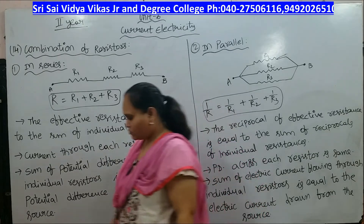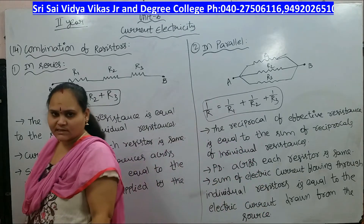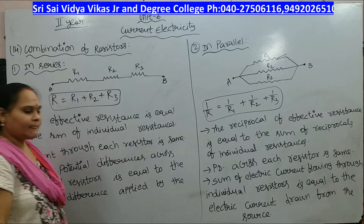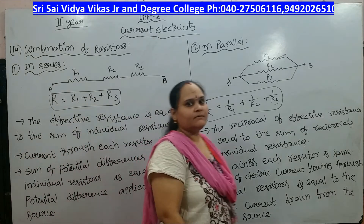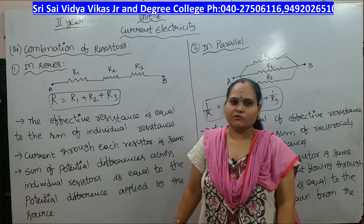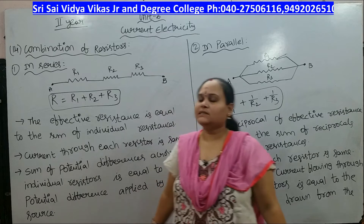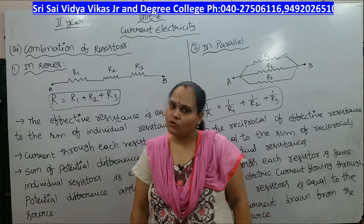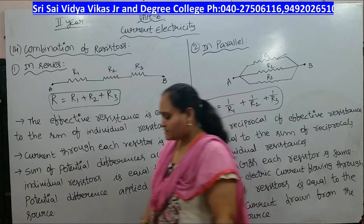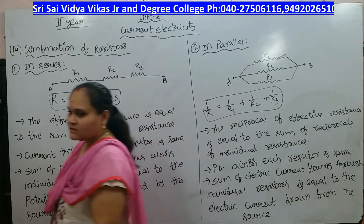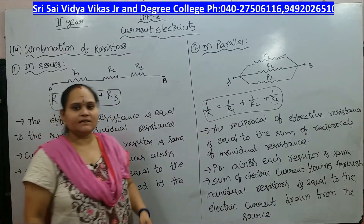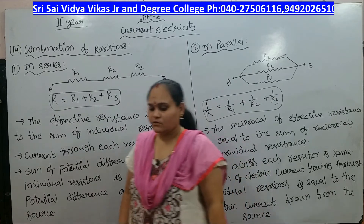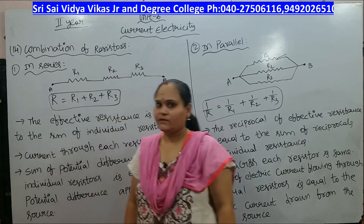Today our topic is to discuss the combination of resistors. Resistance is nothing but a ratio of potential difference to the electric current flowing through that conductor, and its unit is ohms. Resistivity is given by rho = R·A / L.